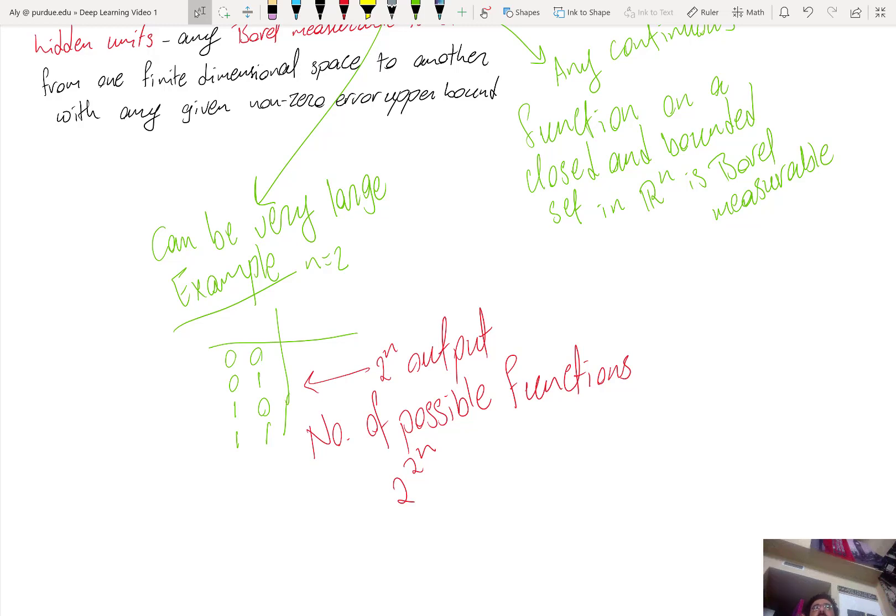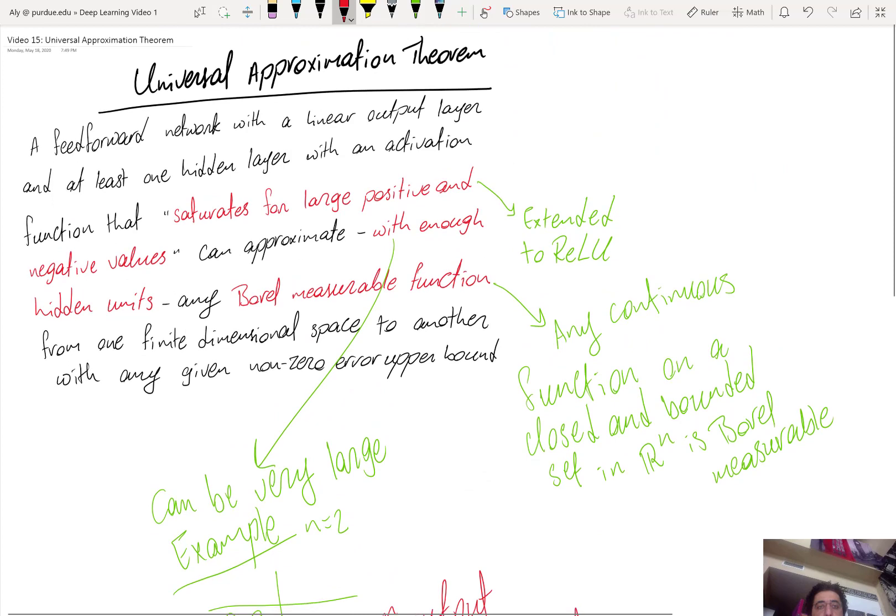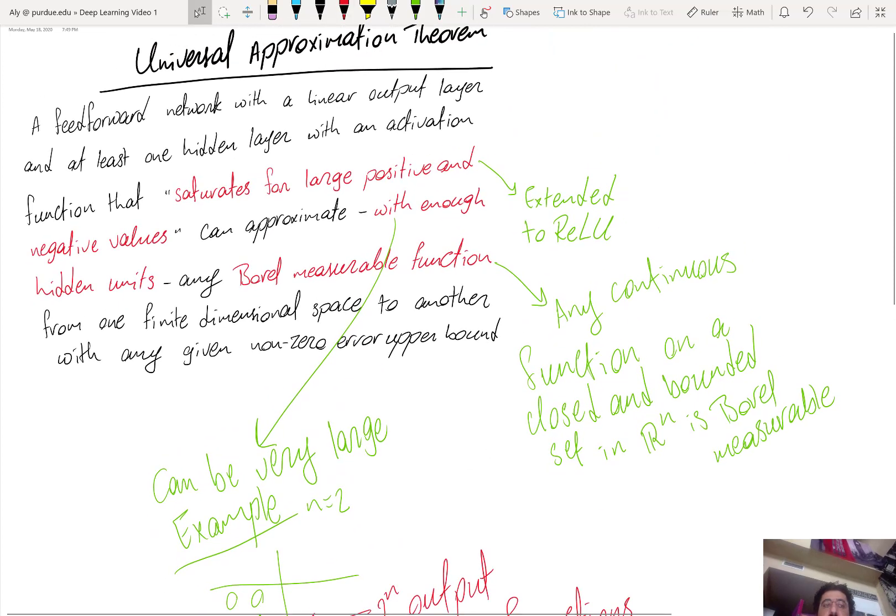So here if I have two to the two to the n hidden units and an input layer with two units, then the number of parameters would be twice this value. Imagine if instead of only two units, you have 10 units or 100 units in the input layer. Imagine if they are not binary but ternary or the alphabet has a larger size and so on. So next time we'll discuss how depth can relieve that computational complexity constraint.